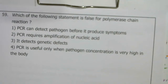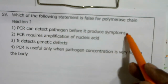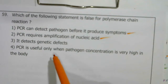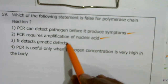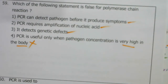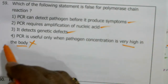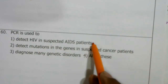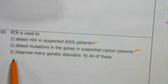Which statement is false for polymerase chain reaction? PCR can detect pathogens before they produce symptoms — correct. PCR requires amplification of nucleic acid — correct. It detects genetic defects — correct. PCR is useful only when pathogen concentration is very high in the body — wrong; even with very small amounts of DNA, PCR can amplify and detect. So the fourth option is the false statement.